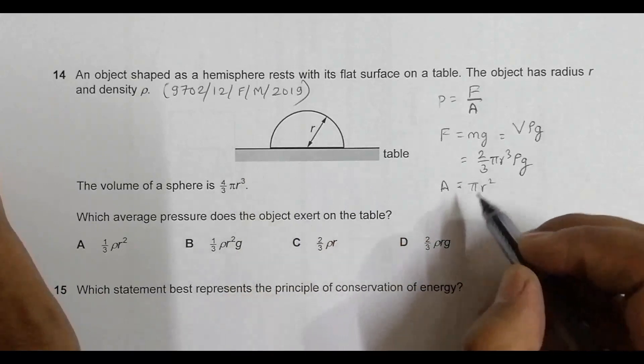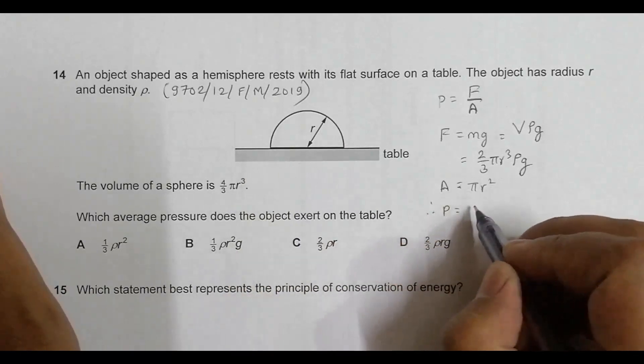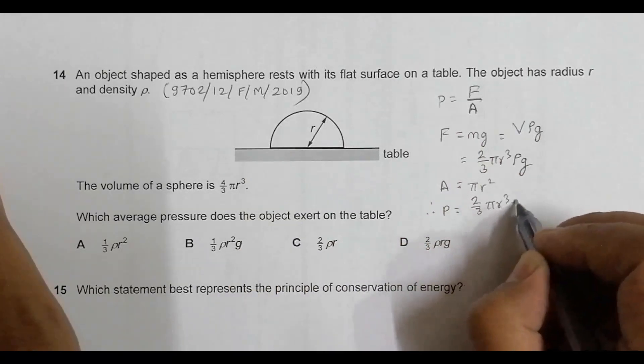Now this gives us the pressure equal to F by A, that's equal to (2/3πr³ρg) divided by πr².